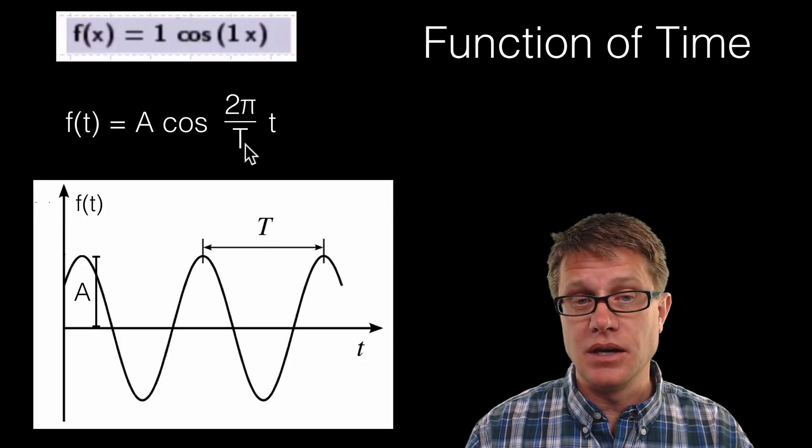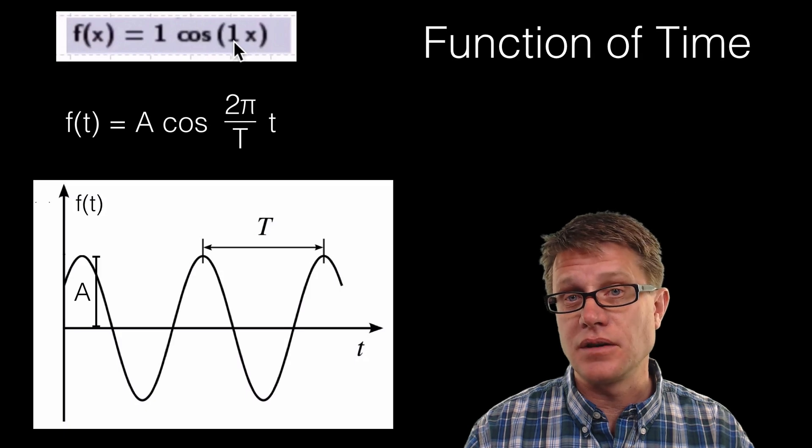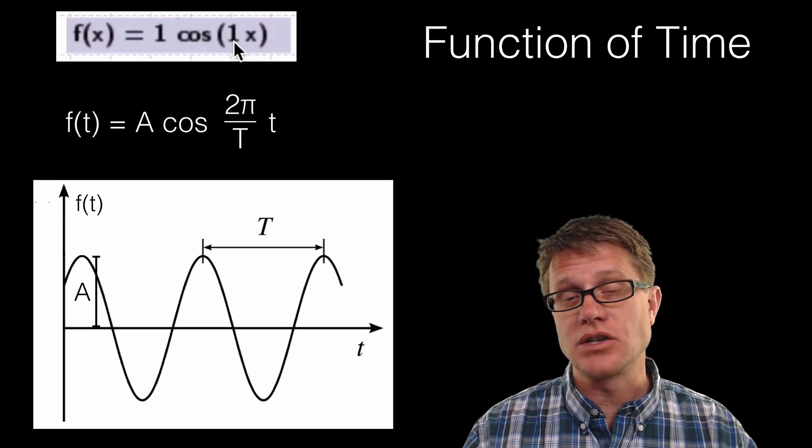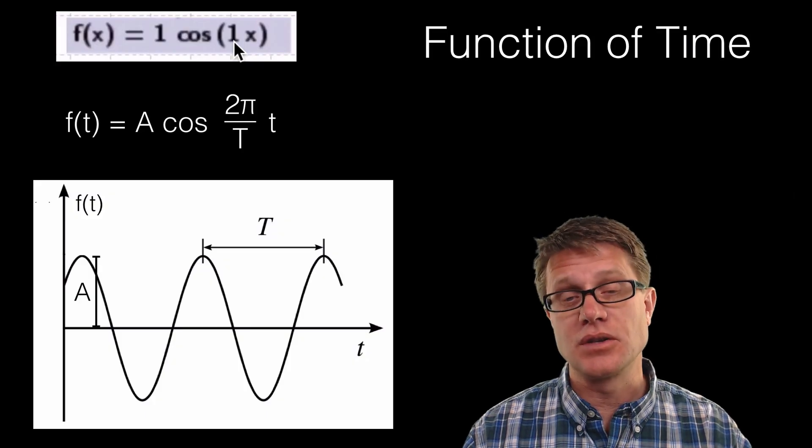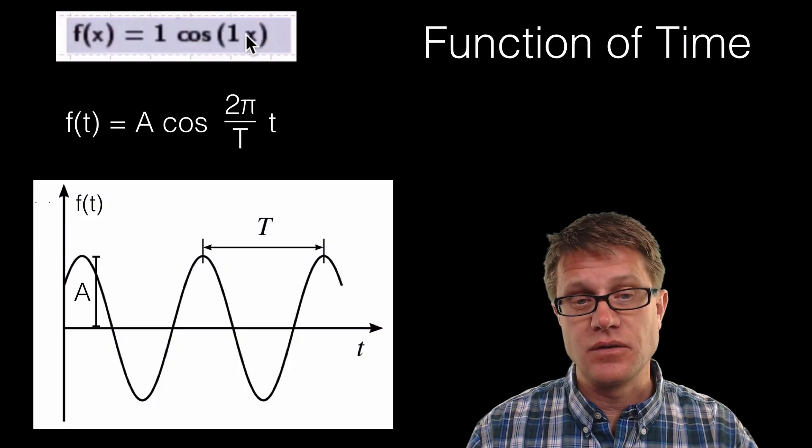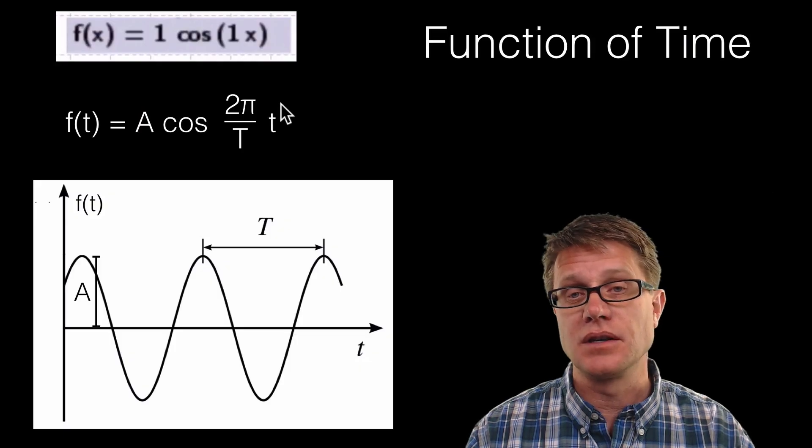And the same thing. If we increase the period of the wave what is happening to the value inside the parenthesis here? It is becoming less, and that is stretching those waves out over time. Now remember frequency is going to be the reciprocal of that. And so since frequency is 1 over T, sometimes you will see this wave equation with frequency in the top.